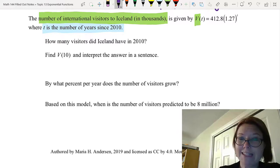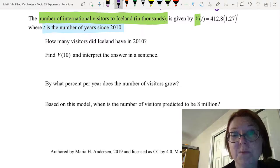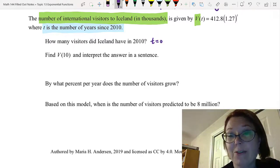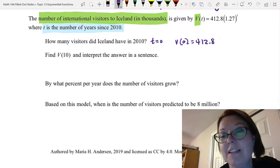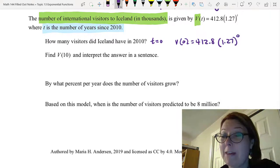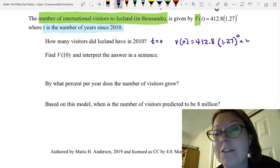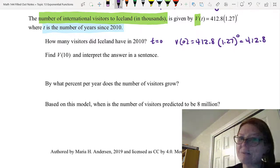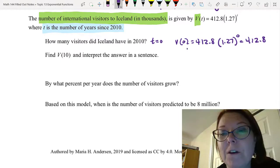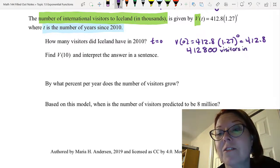Okay, so how many visitors did Iceland have in 2010? Well, 2010 is when t = 0. If we plug in 0 to this function, V(0) = 412.8 times (1.27)^0. Well, when we take something to the 0 power, that's 1. And so we'll be left with 412.8 times 1 or just 412.8. That doesn't mean that Iceland had 412.8 visitors. It means that they had 412.8 thousand visitors. And that would be 412,800 visitors in the year 2010.